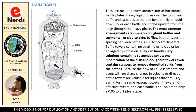And now we have the baffle towers. These extraction towers contain sets of horizontal baffle plates. Heavy liquid flows over the top of each baffle and cascades to the one beneath; light liquid flows under each baffle and sprays upward from the edge through the heavy phase. The most common arrangements are disc and donut baffles and segmental, or side-to-side, baffles. In both types, the spacing between baffles is 100 to 150 mm. Baffle towers contain no small holes to clog or be enlarged by corrosion. They can handle dirty solutions containing suspended solids; one modification of the disc and donut towers even contains scrapers to remove deposited solids from the baffles.